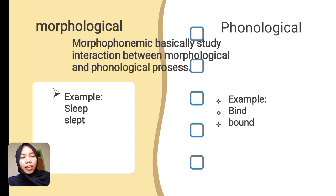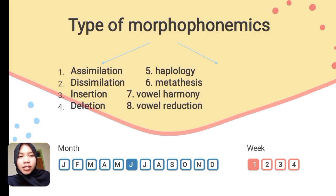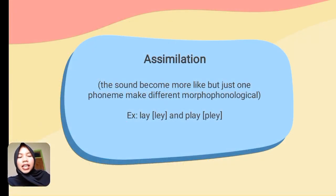For example: sleep and slept, bind and bound. Next, the types of morphophonemics rules. The first type is assimilation. Assimilation is when sounds become more alike, where just one phoneme makes a different morphophoneme.